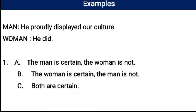Let's have some more examples. This is a conversation between a man and a woman. Man: He proudly displayed our culture. Woman: He did. Here are the options: A — the man is certain, the woman is not. B — the woman is certain, the man is not.